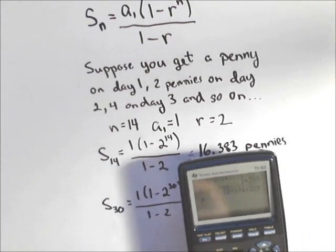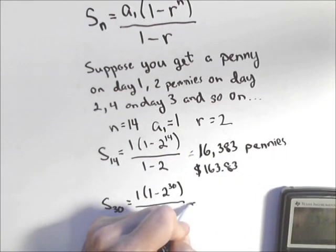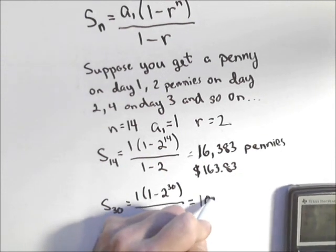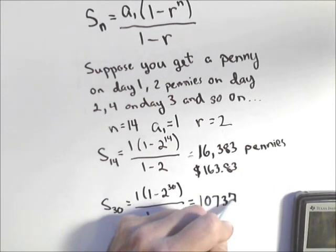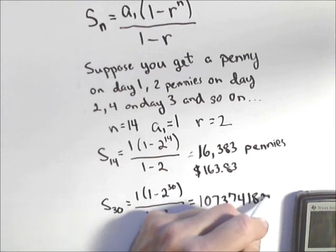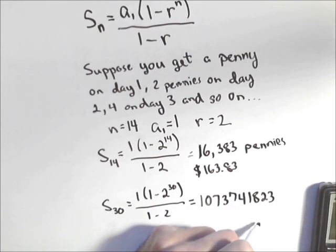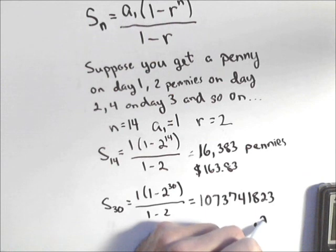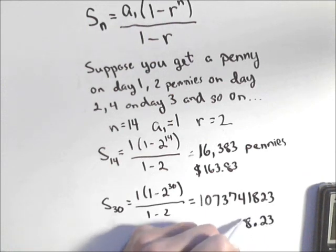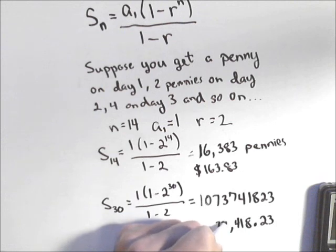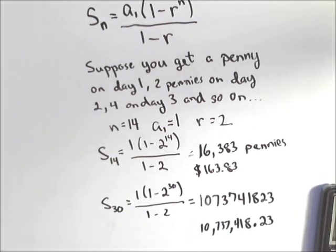I don't know if you can see how long that number is. Here's how many pennies we have: 1,073,741,823. So in dollars and cents, we'd have $10,737,418.23. We'd have over 10 million dollars if we did that for 30 days.